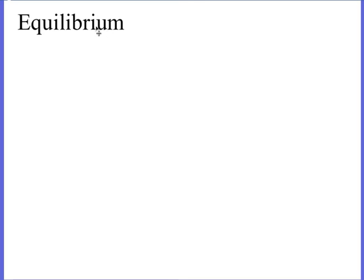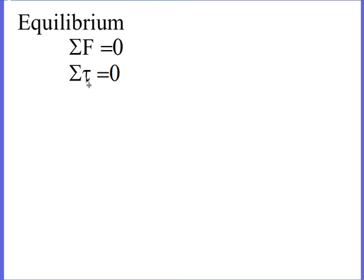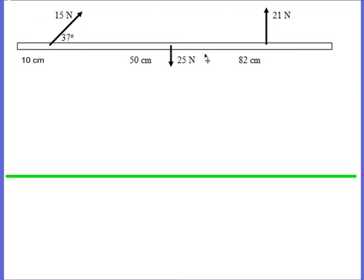We talked about equilibrium already, where all of the forces add up to zero — they equal out, there is no net force, no acceleration. Now we are going to move on from translational equilibrium to also including rotational equilibrium, which means not only is there no translational acceleration, but there needs to be no rotational acceleration either — the net torque needs to be zero. If you have both of these conditions, we refer to it as total equilibrium.